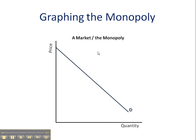First things first. Because the market is the only seller in town, the industry or the market supply graph is sufficient to analyze this one firm — they are one and the same. We don't need a two-pane analysis like we did for perfectly competitive firms. The market pane and the firm pane are exactly the same because the monopoly is the only game in town. The vertical axis is price, horizontal axis is quantity, and price is also the monopoly's cost, and quantity is also the monopoly's output.